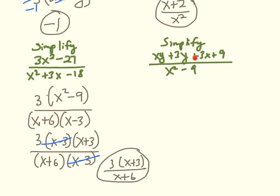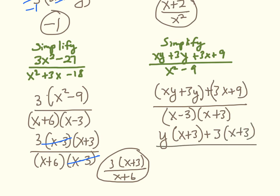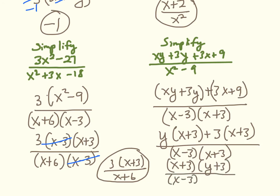The last one: I factor the numerator by grouping and the denominator as a difference of two squares. The numerator is xy plus 3y plus 3x plus 9 — grouping: factoring y from the first two terms gives (x plus 3), factoring 3 from the last two terms also gives (x plus 3). Factoring out the common binomial (x plus 3) leaves (y plus 3). The denominator (difference of two squares) factors as (x minus 3)(x plus 3). The (x plus 3) factors cancel, giving a final answer of (y plus 3) over (x minus 3).